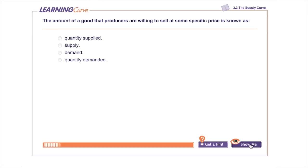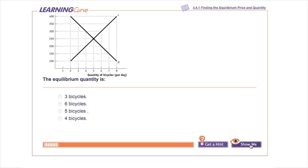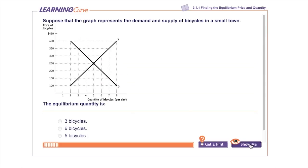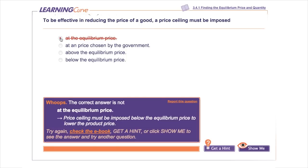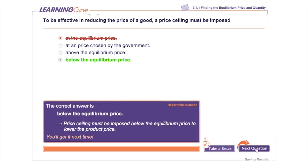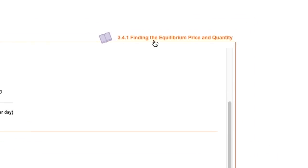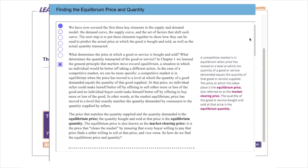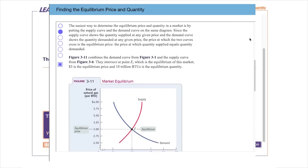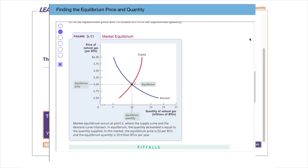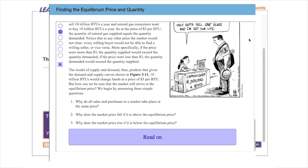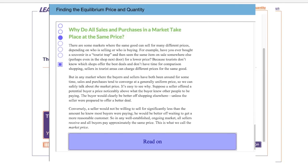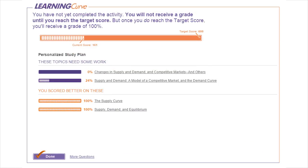Learning Curve Adaptive Quizzing offers individualized question sets and feedback for each student based on his or her correct and incorrect responses. All the questions are tied back to the ebook to encourage students to use the resources at hand. Learning Curve is an adaptive resource that smartly tailors the questions to the student's level of understanding and to the areas where they need the most help.